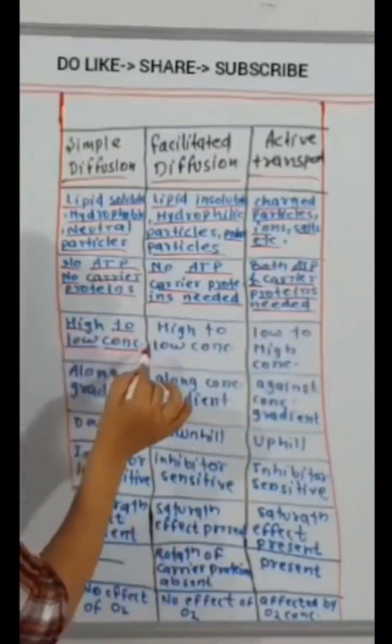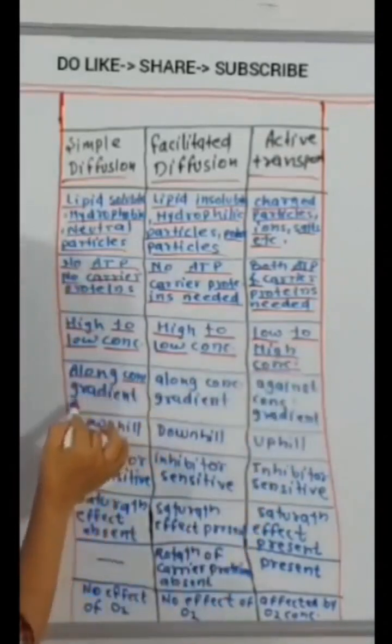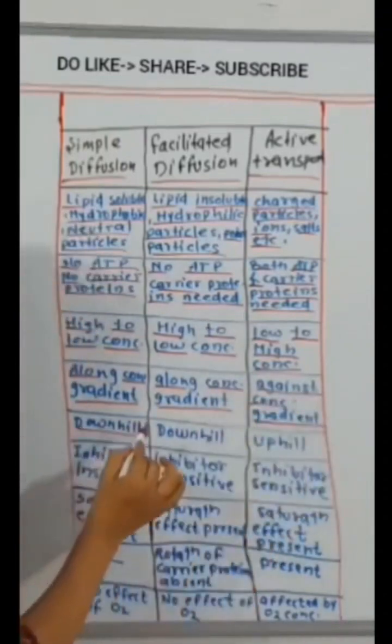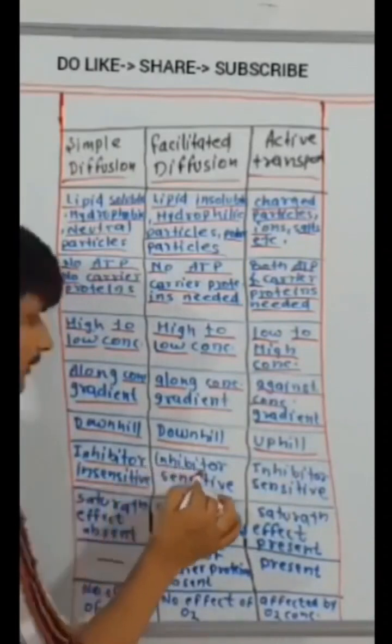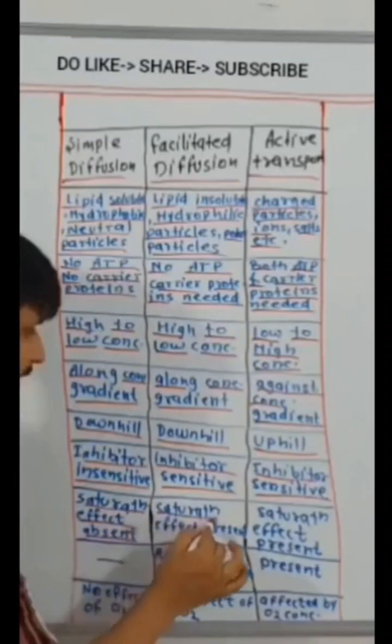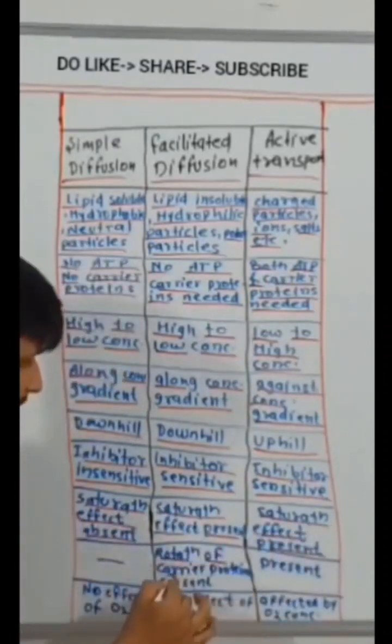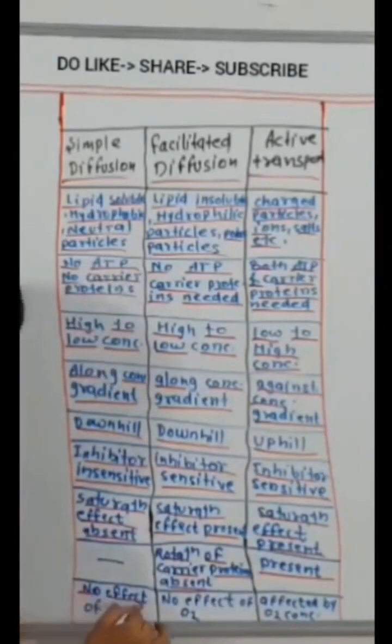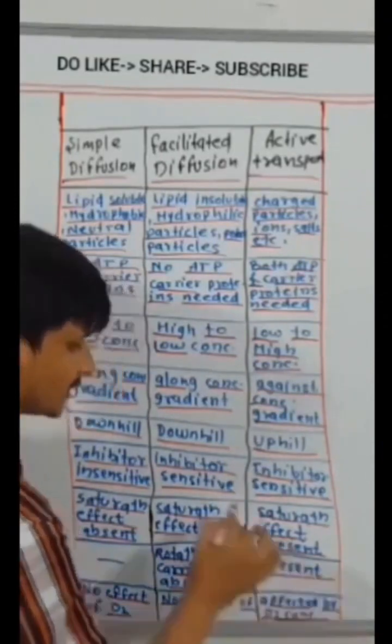High to low concentration. Along the concentration gradient. Against concentration gradient. Downhill, uphill. Inhibitor insensitive. Inhibitor sensitive. Saturation effect absent. Saturation effect present. Rotation of carrier proteins absent, rotation of carrier proteins present. No effect of oxygen, affected by oxygen concentration.